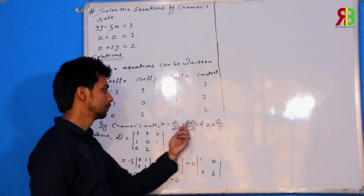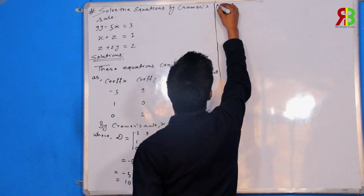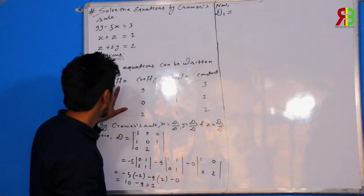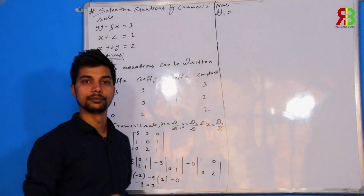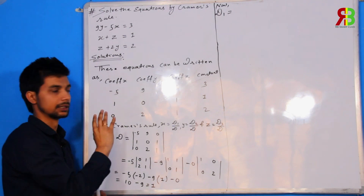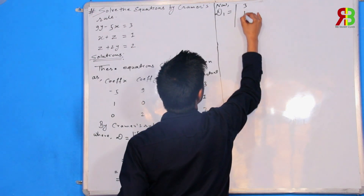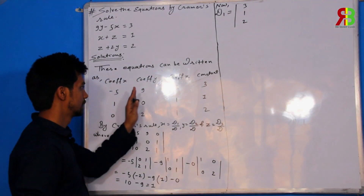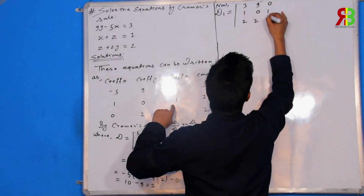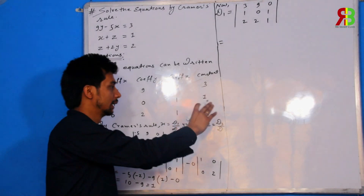Now we can find the remaining. d1, d2 and d3. I will find out. This is important. d1 find out — first column like constant column replace. Minus 5, 1, 0, like 3, 1, 2, replace. Second or third as it is, 9, 0, 2.